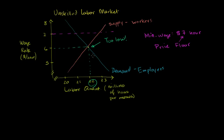So what's going to happen here? Well, if you look at the demand side of things, the employers are going to say, wow, if I have to pay $7 an hour now, I can only afford 21 million hours of labor. So they're going to say, I can only afford now 21 million hours of labor.